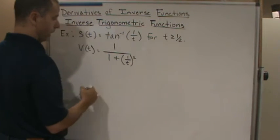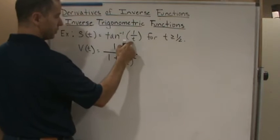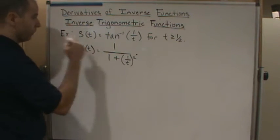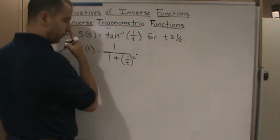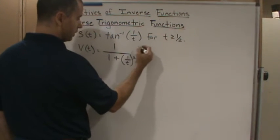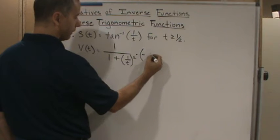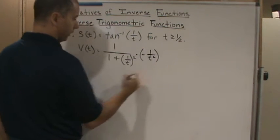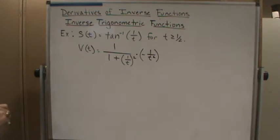Now how do we differentiate 1 over t? Remember, it's t to the negative 1 power, so this is negative 1 over t squared. Just remember the power rule for negative exponents.